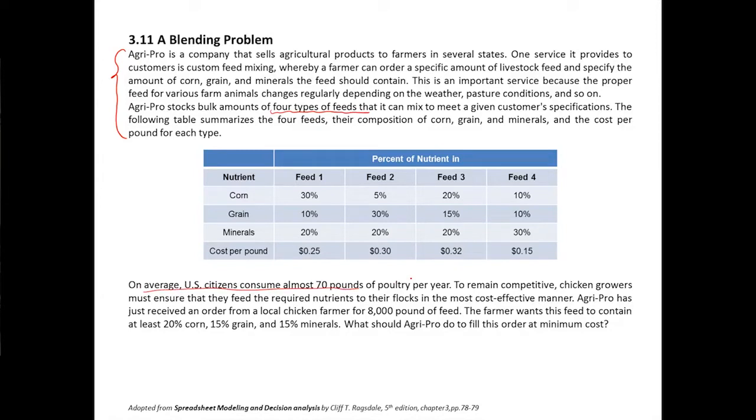Chicken growers must ensure that they feed the required nutrients to their flocks in the most cost effective manner. Agri-Pro has just received an order from this local chicken farm for 8,000 pounds of feed, and they want this feed to contain at least 20% corn, 15% grain, and 50% minerals.